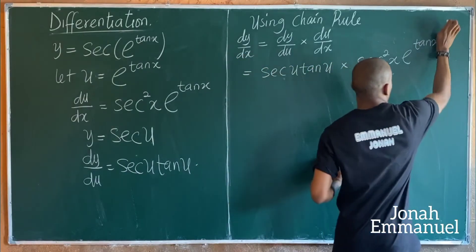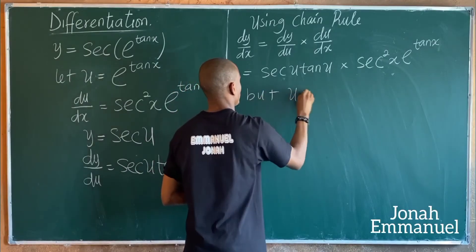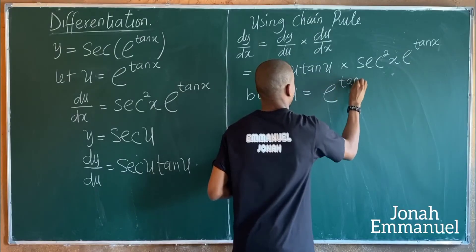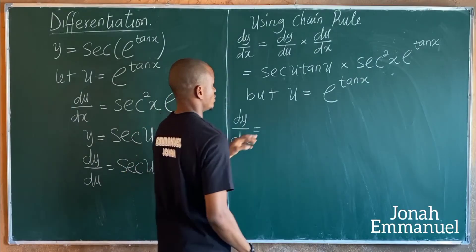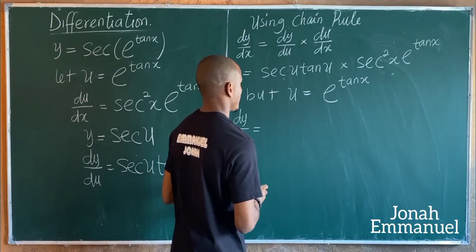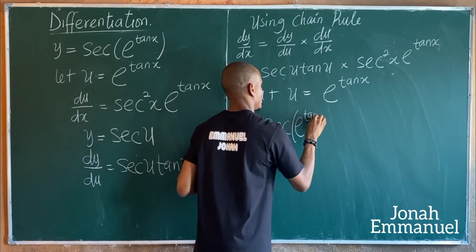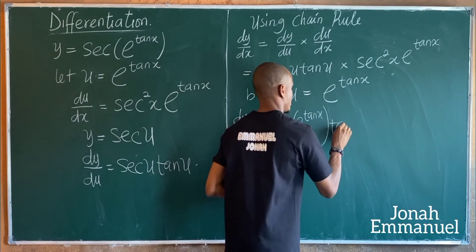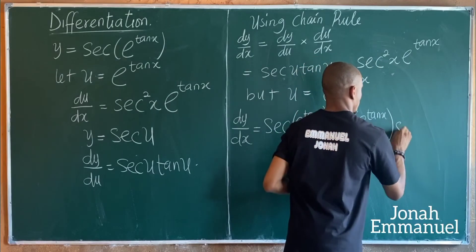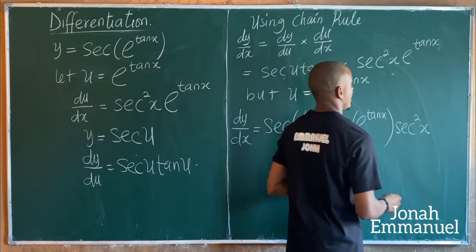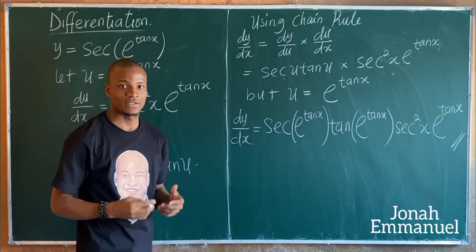Since u equals exponential tan x, substituting back gives dy/dx equals sec(e^(tan x)) times tan(e^(tan x)) times sec squared x times exponential tan x. This is the result after differentiation.